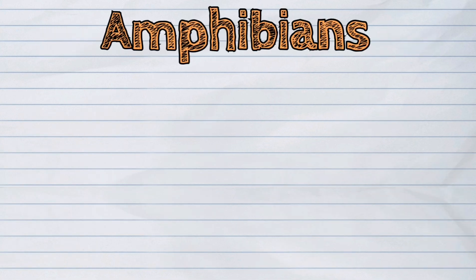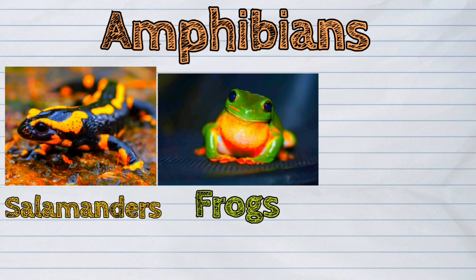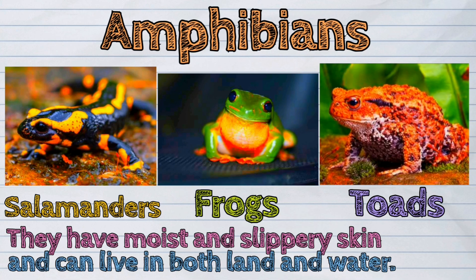The second group are the amphibians like the salamanders, frogs, and toads. They have moist and slippery skin and can live in both land and water.